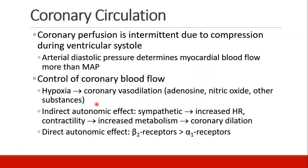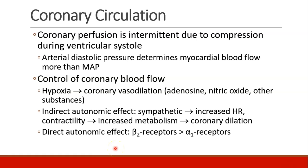How does the body control coronary blood flow? When there's hypoxia, the coronary arteries vasodilate due to molecules in the blood, including adenosine or nitric oxide, leading to increased perfusion of the heart. There's also an autonomic effect: when there's a sympathetic response, the heart needs more oxygen, leading to increased heart rate and contractility, which leads to increased metabolism and coronary dilation. There's also a direct autonomic effect — the sympathetic response leads to stimulation of beta receptors more than alpha receptors, also leading to improved coronary perfusion.